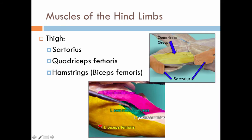Muscles of the hind limbs, starting with the thigh. We have the quadriceps group, seen here — this is an inferior, ventral view of the underside of the cat. And then the sartorius, right here, which in humans is referred to as the tailor's muscle. Here it's been cut and flapped open, so it would have closed over the quadriceps. And then the biceps femoris, a lateral muscle which is part of the hamstrings group, and we know that helps to flex at the knee.